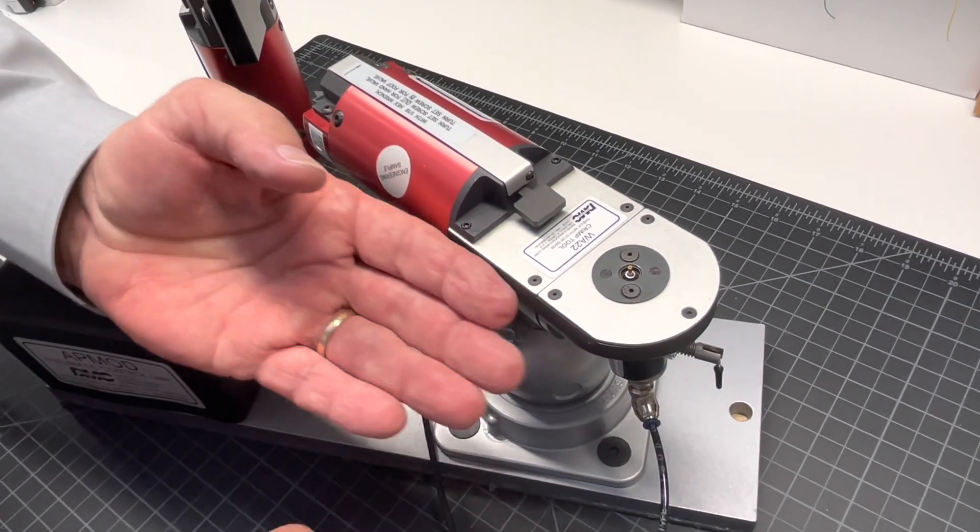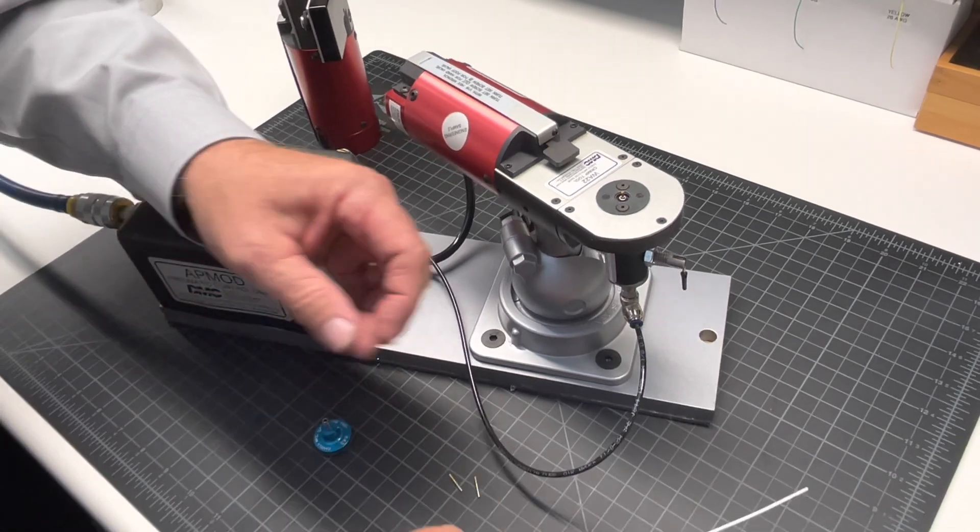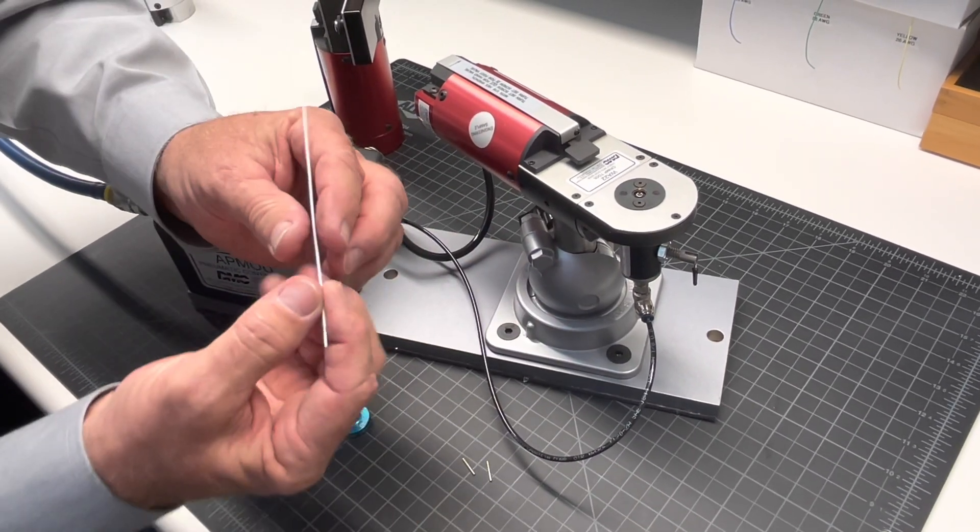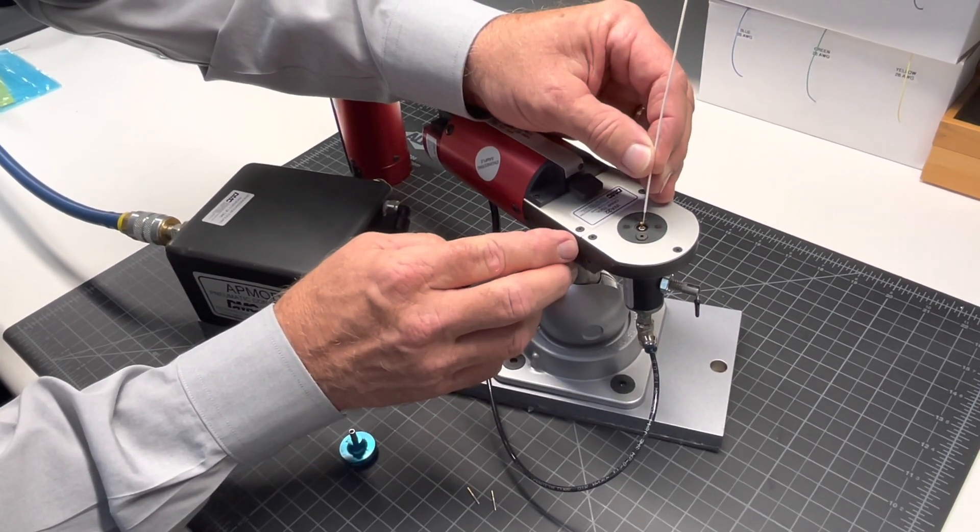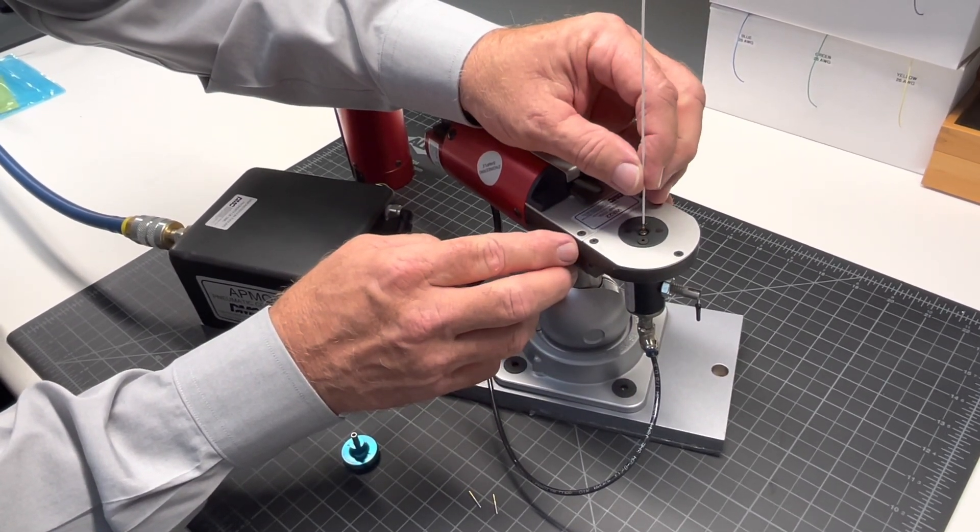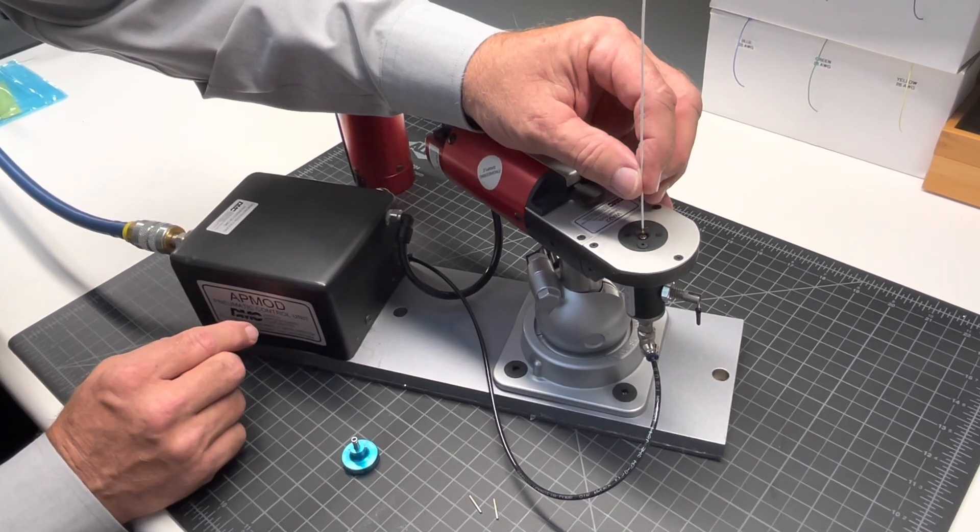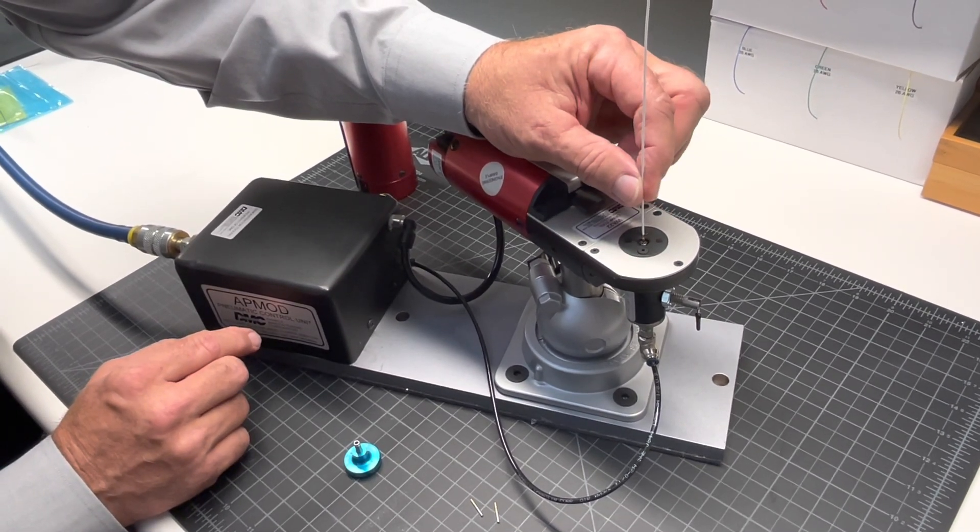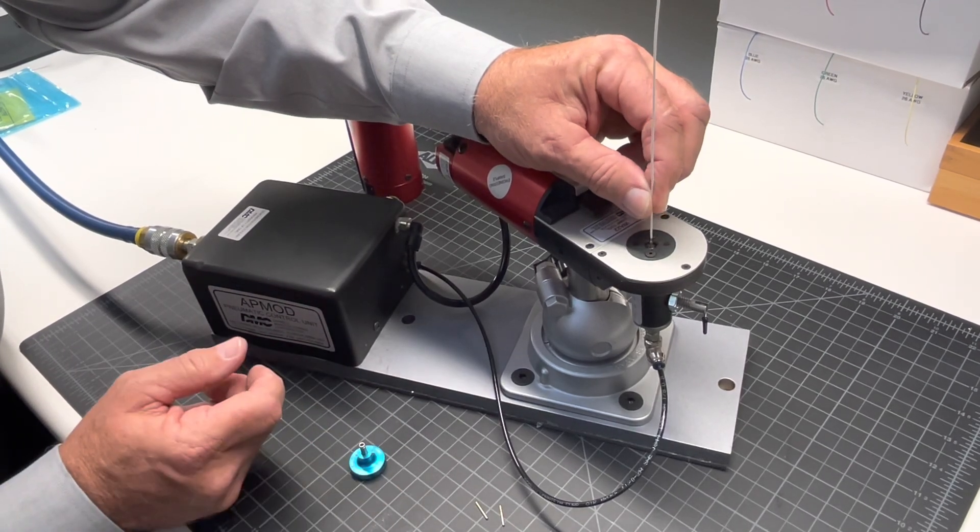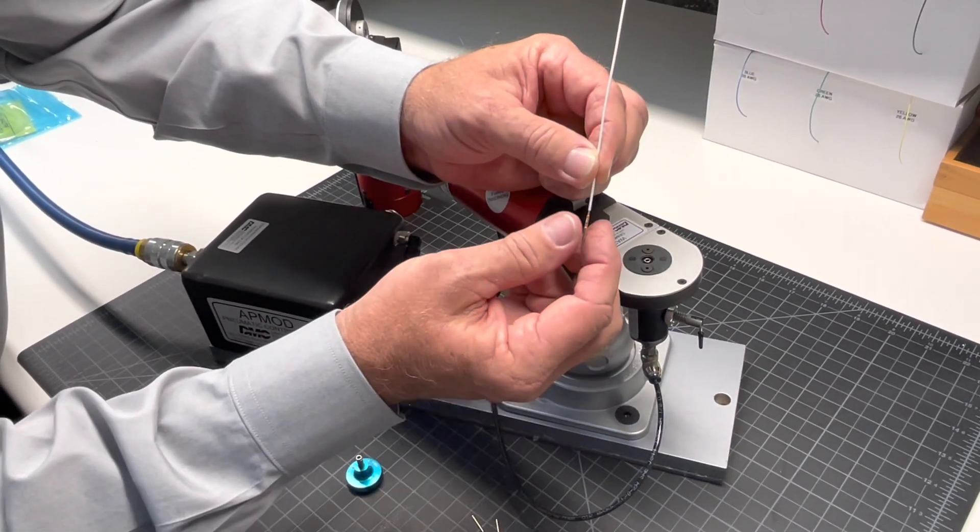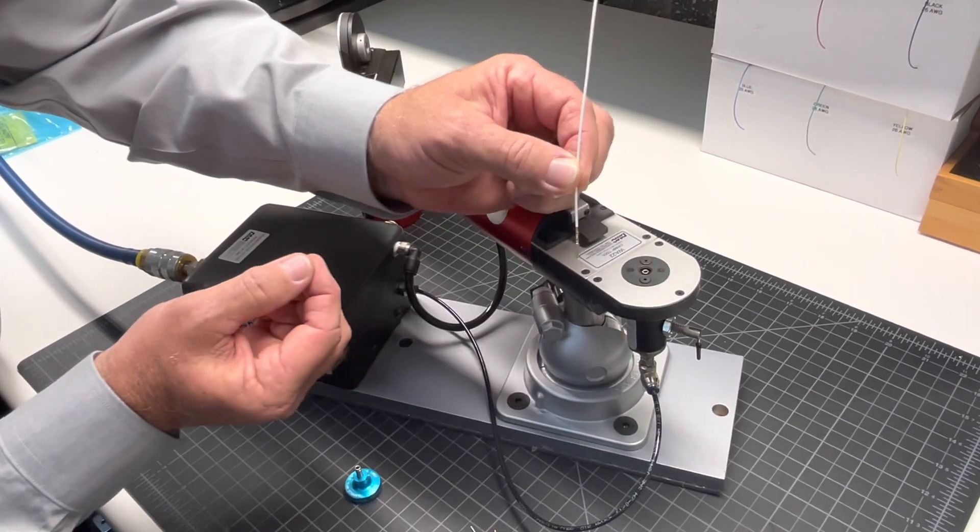With the contact raised and visible, it's much easier for the operator to visually see that the wire is being inserted properly into the contact. To activate the tool, all the operator has to do is simply push down all the way and it will automatically crimp the contact without a foot pedal or activating a finger press.